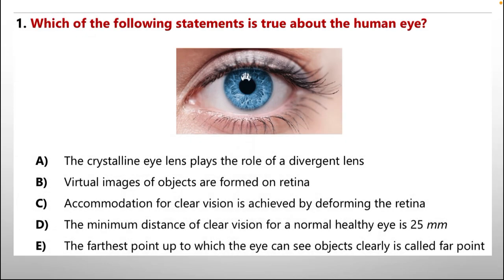Question 1: Which of the following statements is true about the human eye? Option A: The crystalline eye lens plays the role of a divergent lens. B: Virtual images of objects are formed on the retina. C: A combination for clear vision is achieved by deforming the retina. D: The minimum distance of clear vision for a normal healthy eye is 25 mm. E: The farthest point up to which the eye can see objects clearly is called the forepoint.